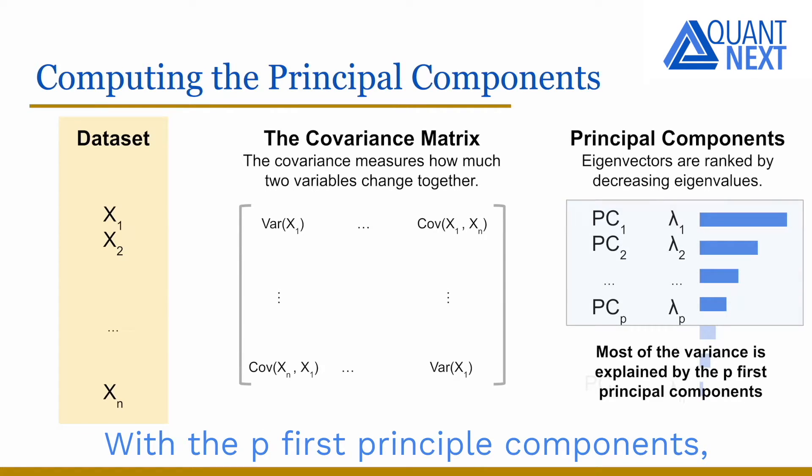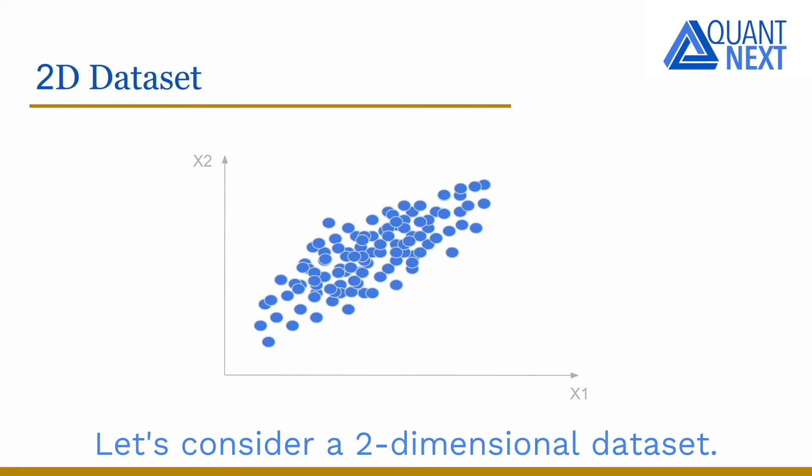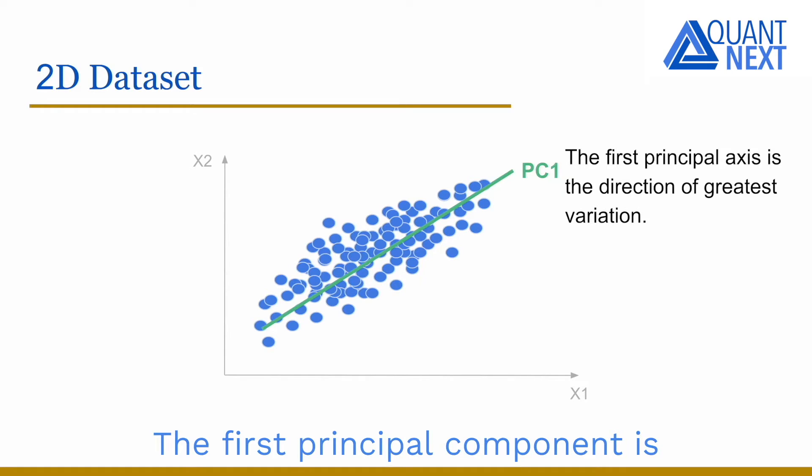With the p-first principal components, we are able to explain most of the variants in our dataset. Let's consider a two-dimensional dataset. The scatter plot shows the relationship between the two variables. The first principal component is the direction of greatest variation.